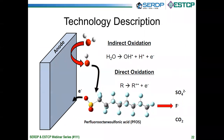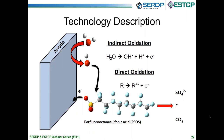Once you have an appropriate anode material, you can achieve complete mineralization of PFOS compounds through a two-step process. Various studies have shown that PFOS are unreactive with hydroxyl radicals. However, if PFOS first undergoes direct oxidation at the electrode surface to form a radical species, that activates the compound and allows it to be reactive with the hydroxyl radicals also generated on the electrode surface. This two-step process can continue and eventually result in complete mineralization, producing sulfate, fluoride, and CO2 for PFOS.